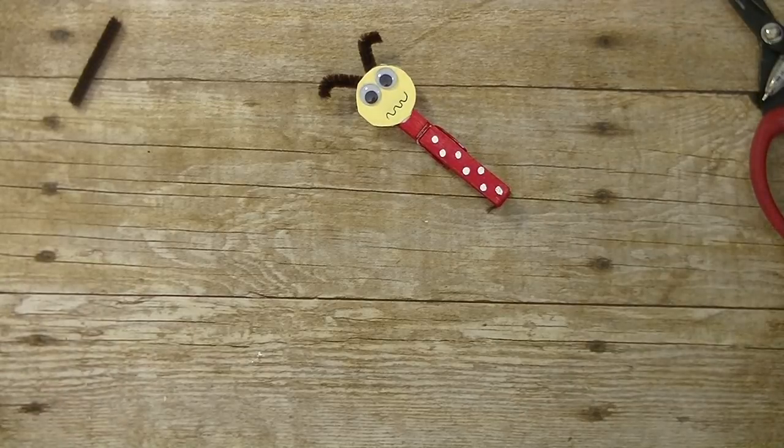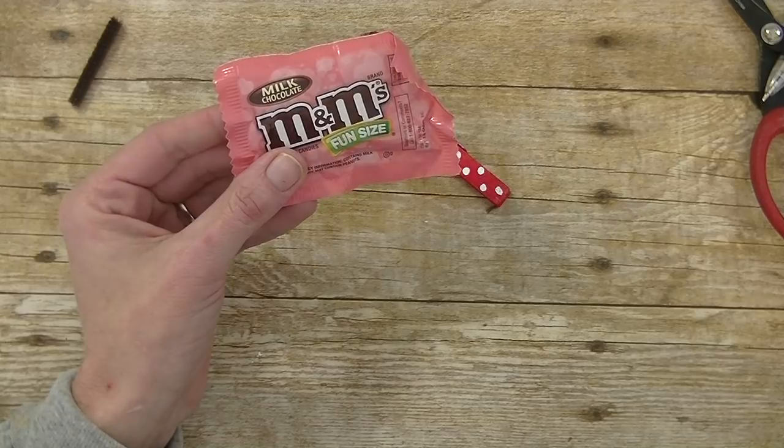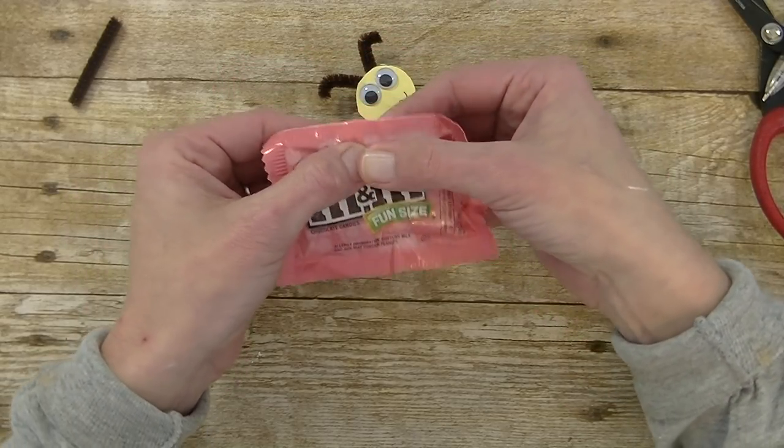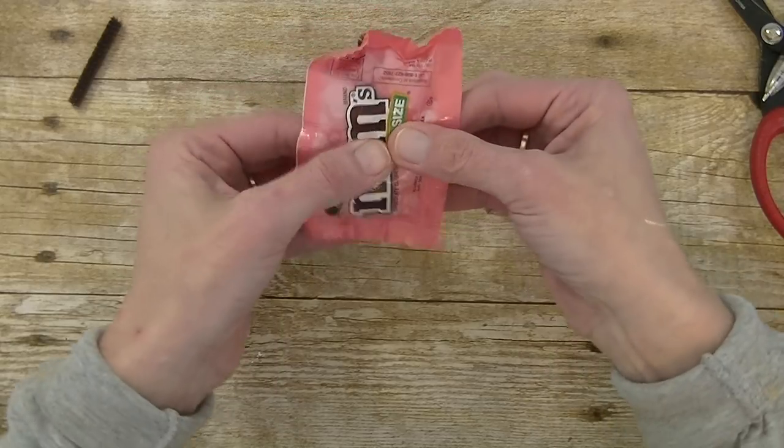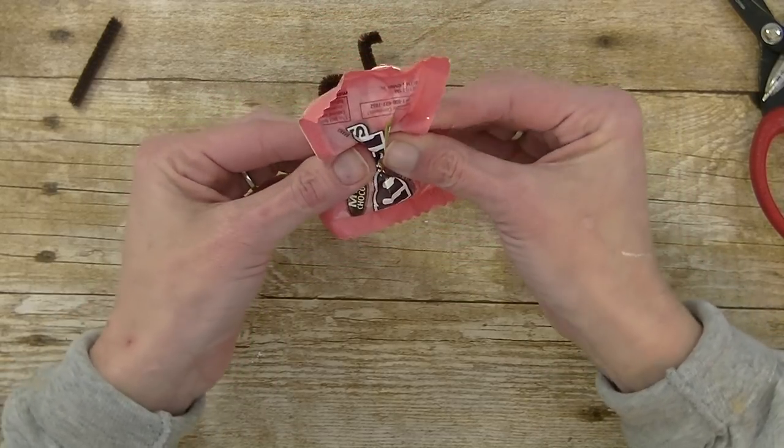Now for the treats. I'm going to use these fun size M&M's. You can use any kind of packaged candy. If you want to use Skittles you can do that. And what I want to do is just kind of separate them a little bit. So I have nothing in the middle.